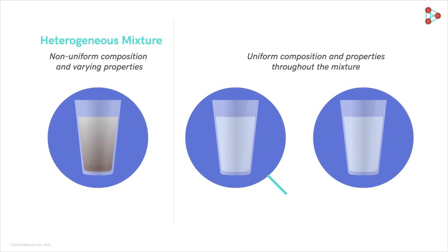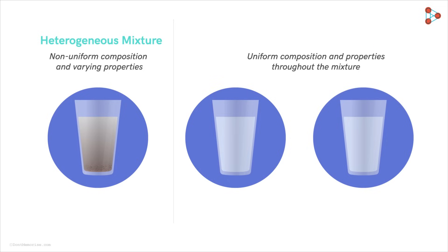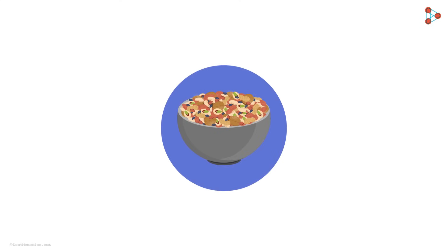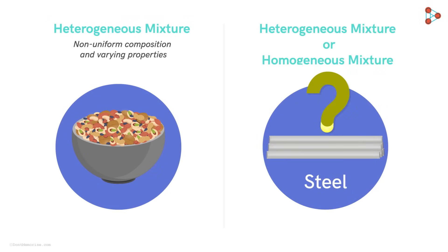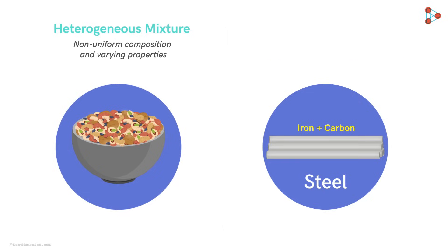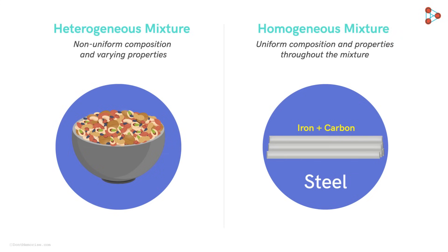In the second type of mixture, we cannot separately see the individual components. A mixture in which composition and properties are uniform throughout is called a homogeneous mixture. For example, in a bowl of mixed nuts you can identify the different nuts, so it's heterogeneous. But steel — a mixture of mainly iron and carbon along with other elements — has components not visible to the naked eye and uniform composition throughout, so it's a homogeneous mixture.